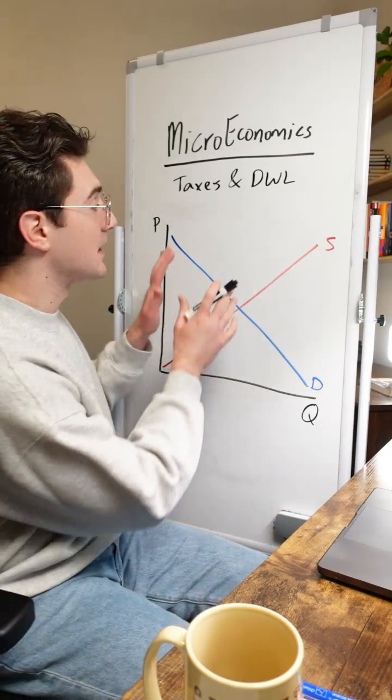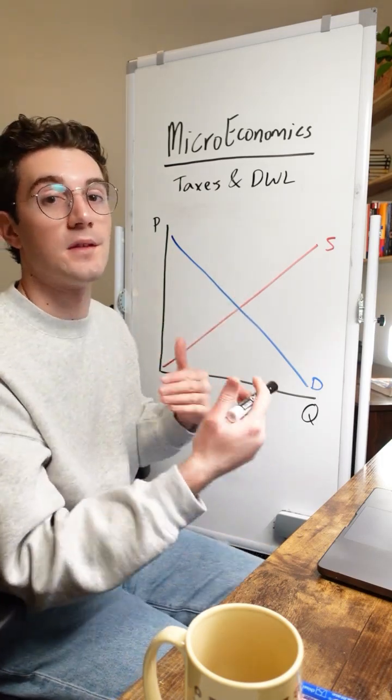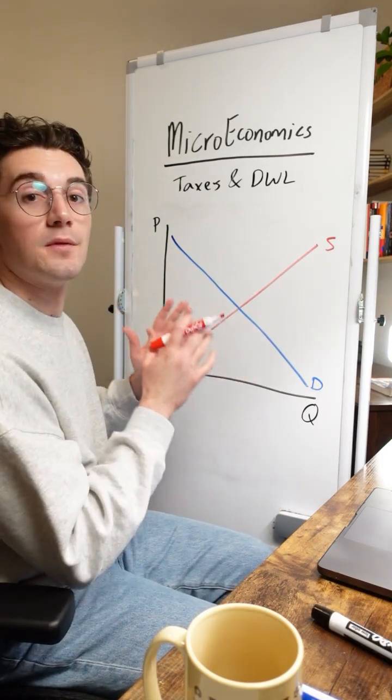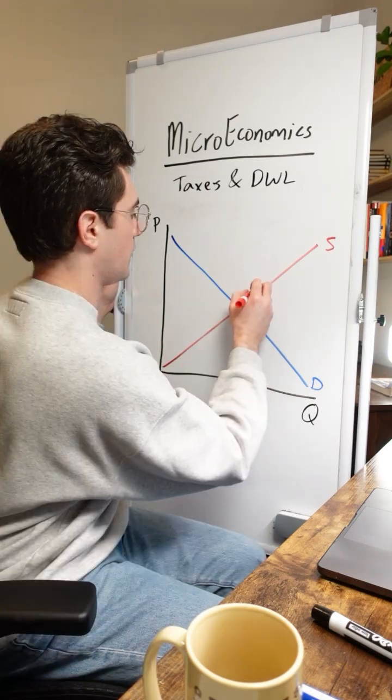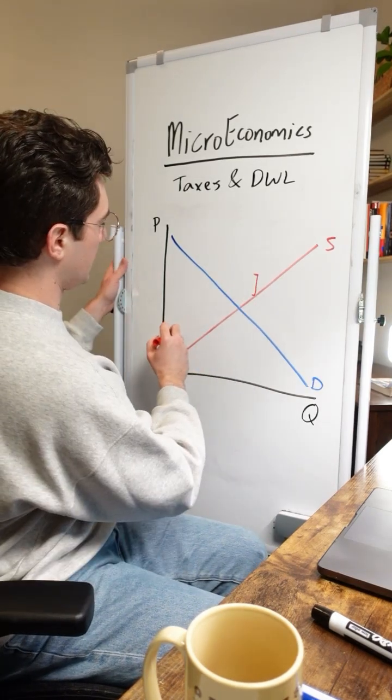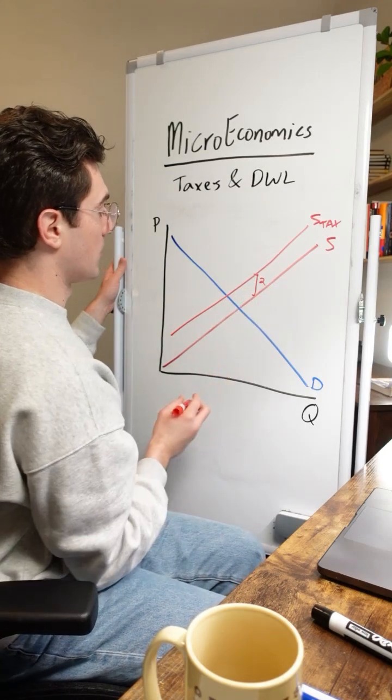All right, so now with that being said, let's start here by shifting the supply curve by the amount of the tax. For the sake of this example, let's say the tax is $2, equating to this height right here. That means the supply curve is going to shift up by that $2 amount.